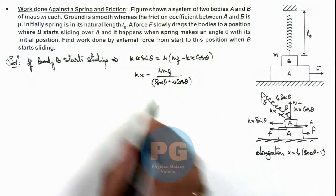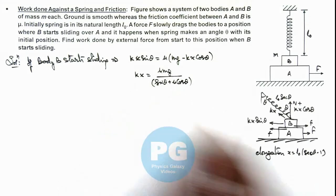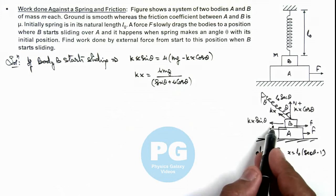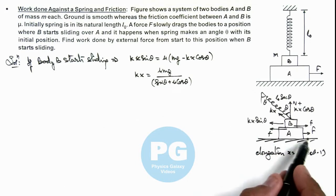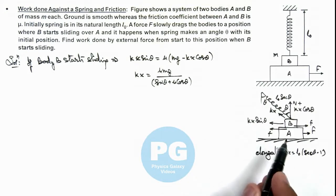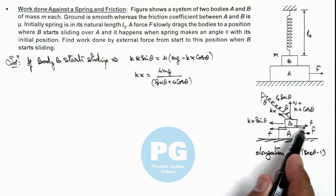So if this is the spring force acting on it and at this instant if the block starts sliding, then we can say the work done till now by the external force will be going to the potential energy of the spring, as no sliding is taking place anywhere so work done by the static friction would be zero.